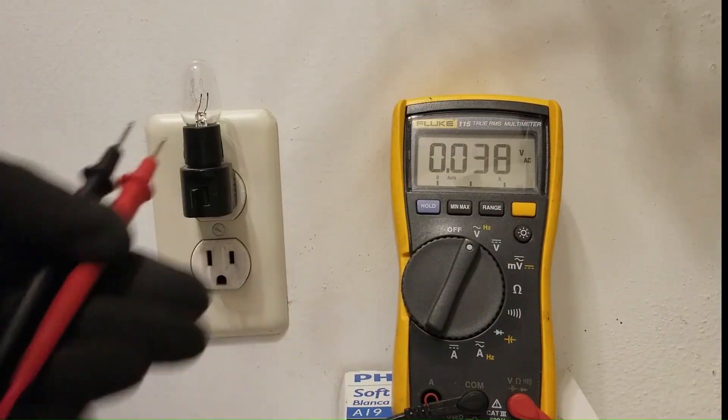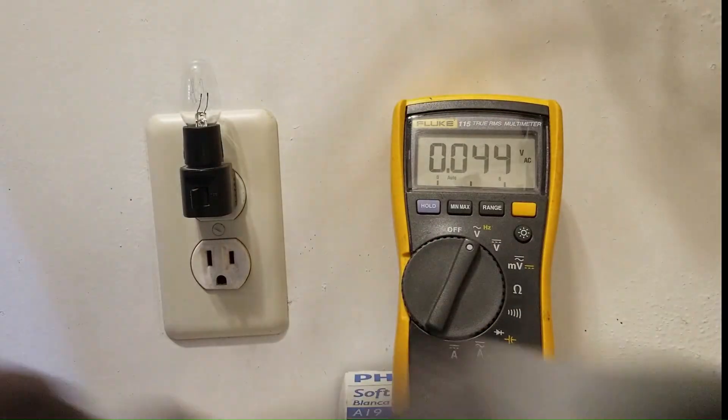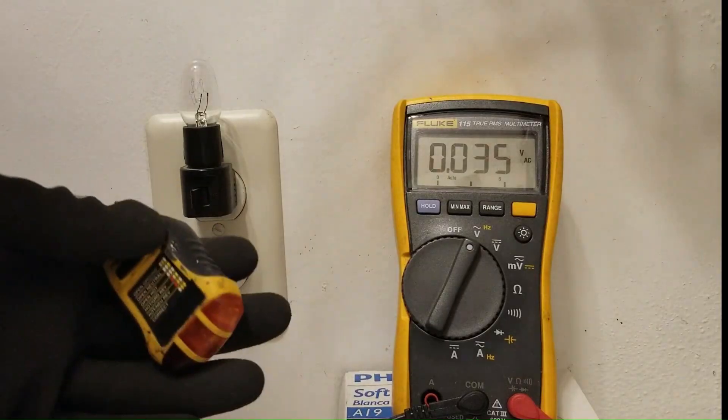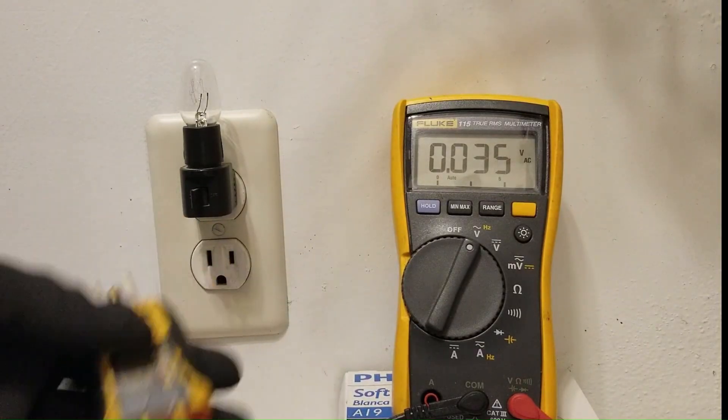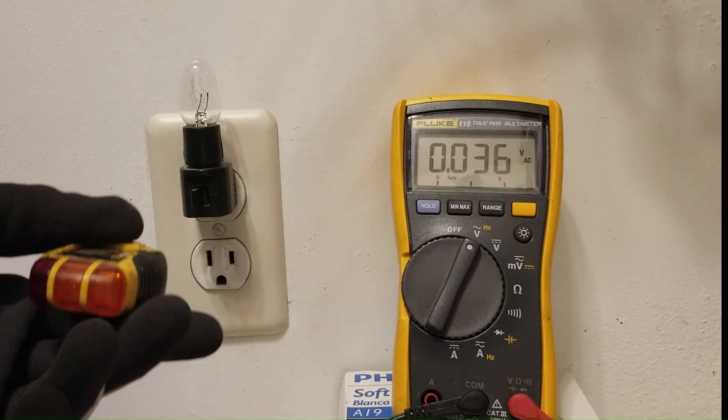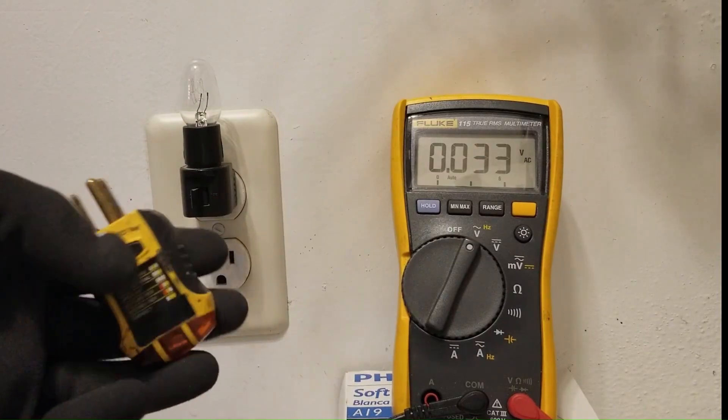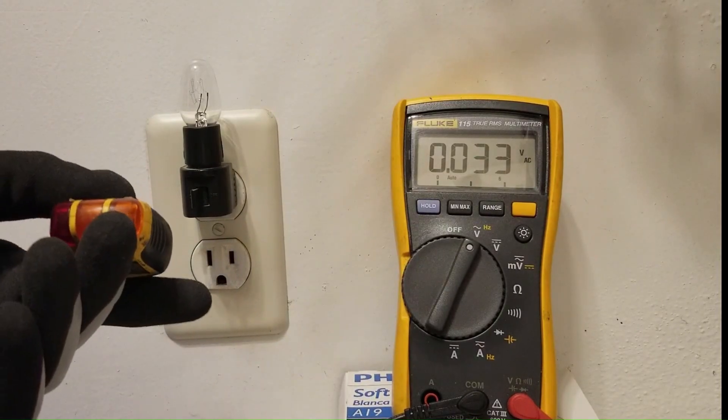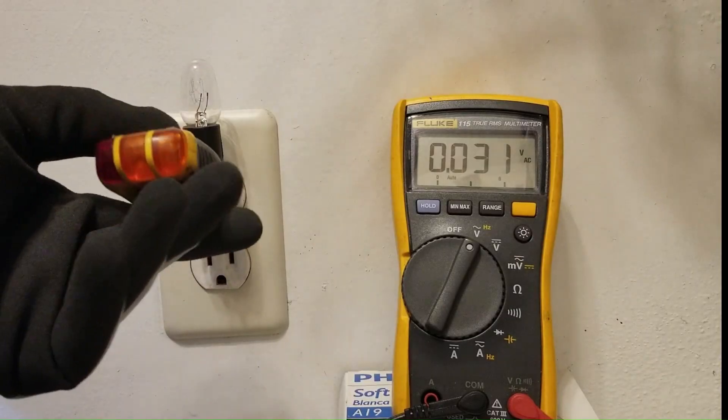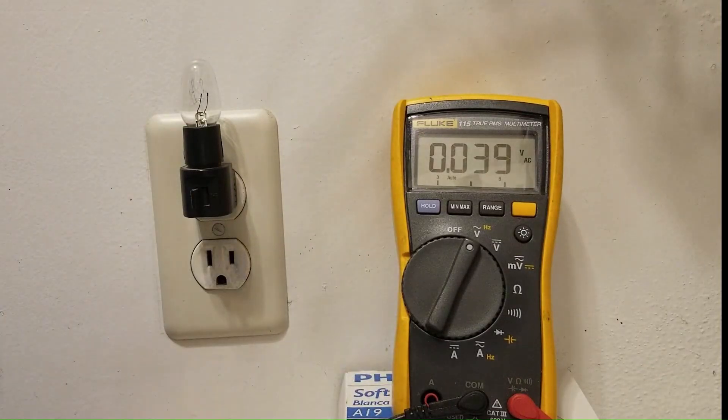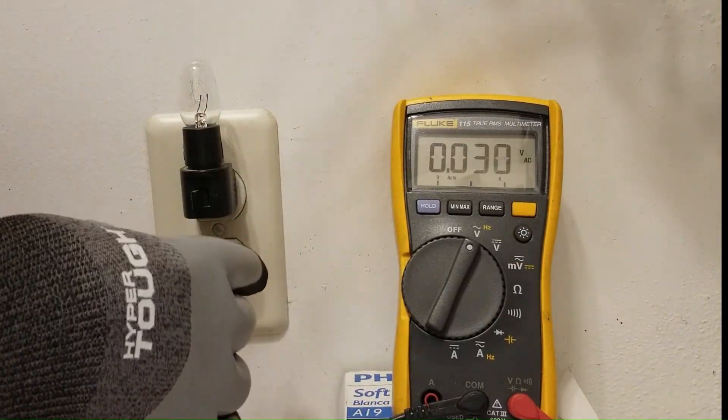So we have a problem with this outlet, even though the voltage tester says it's good. But again, the voltage testers are looking for open lines. And this is not an open line. This is a loose neutral. It's a type of a neutral issue that is a result of an upstream loose connection that causes the outlet to fail under load.